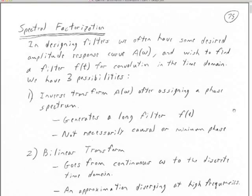We're on notes number 9, page 75. This is really the central part of filter design, and it's called spectral factorization. At the end of this, we're actually going to design a real filter — one that you've maybe heard of — called the Butterworth filter.